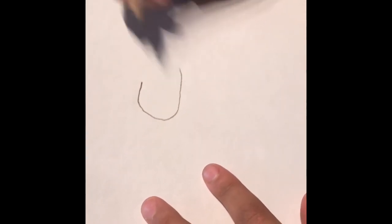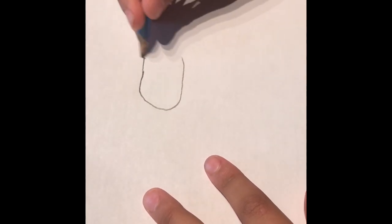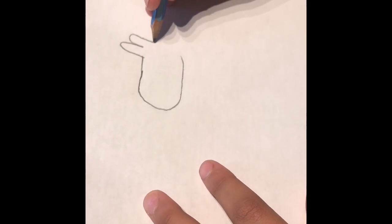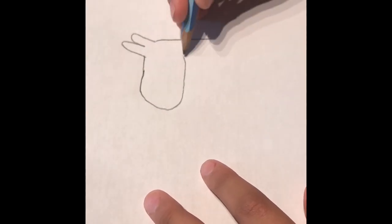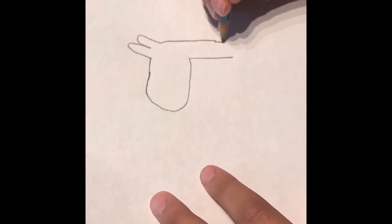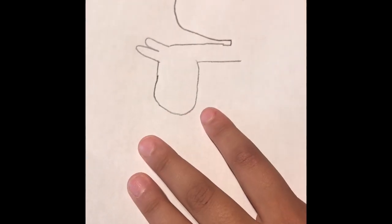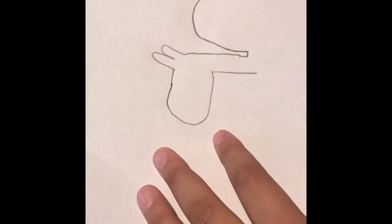First we draw the head. Then we draw the two ears. Then we draw the neck. Then we draw the hump. Then we draw the rest of his body.